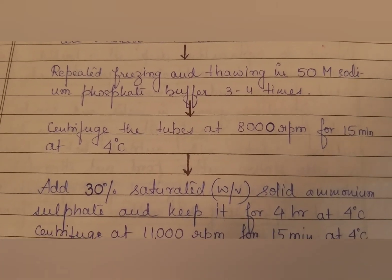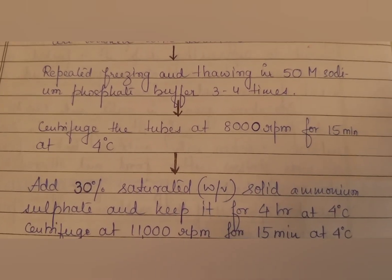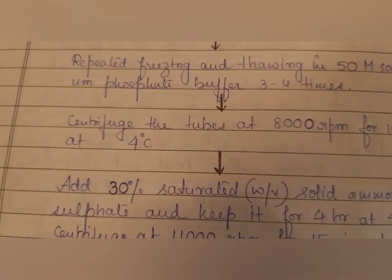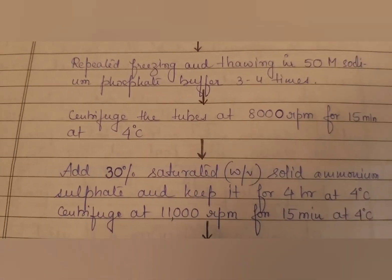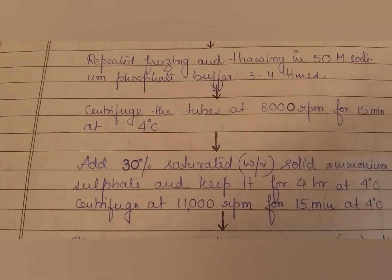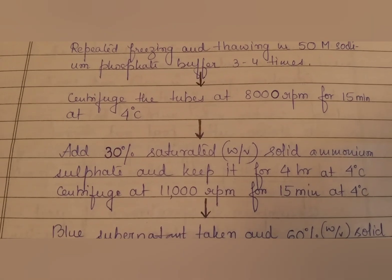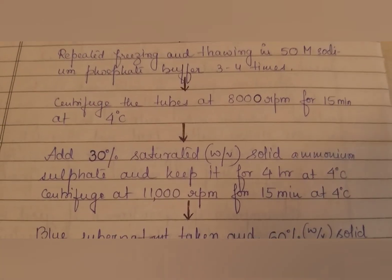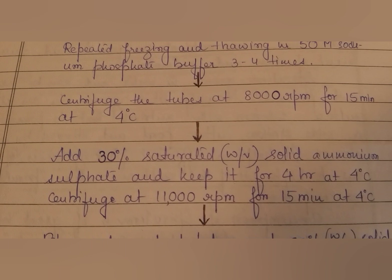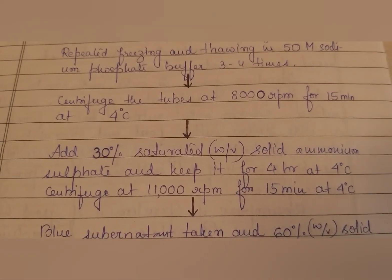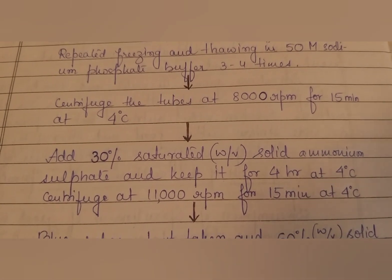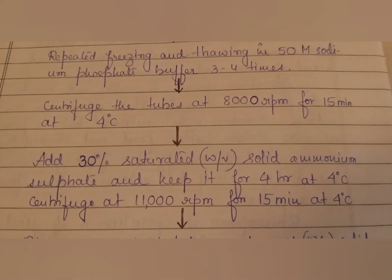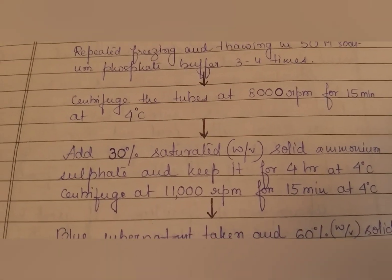The tubes are centrifuged at 8000 RPM for 15 minutes at 4°C. After that, 30% saturated (weight by volume) solid ammonium sulfate is added and kept for 4 hours at 4°C, followed by centrifugation at 11,000 RPM for 15 minutes at 4°C.